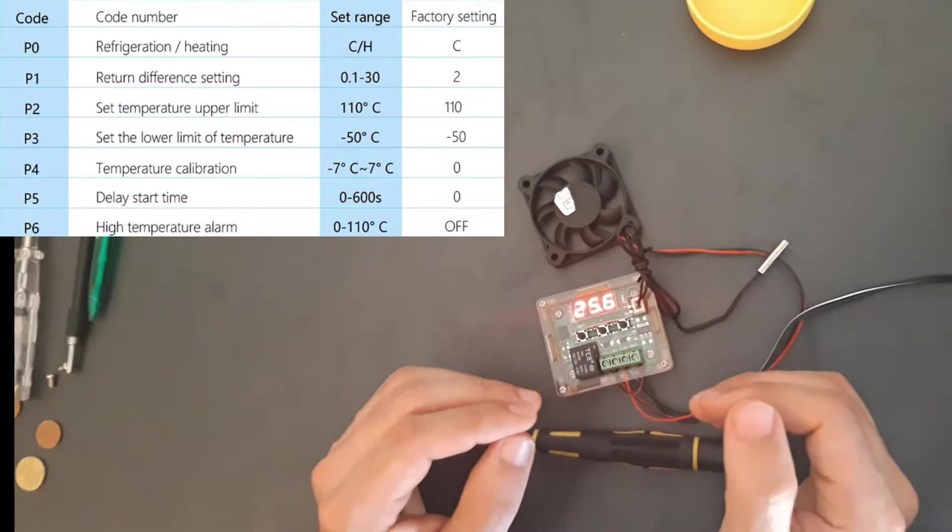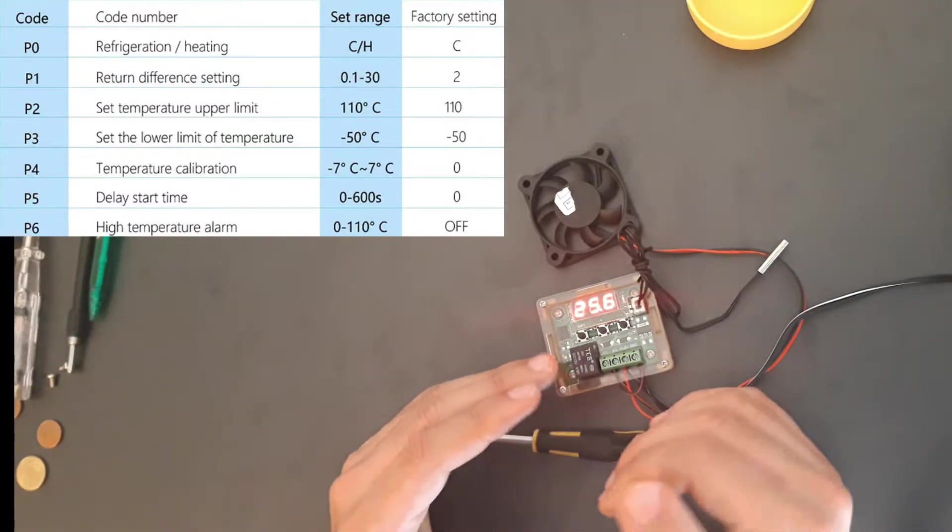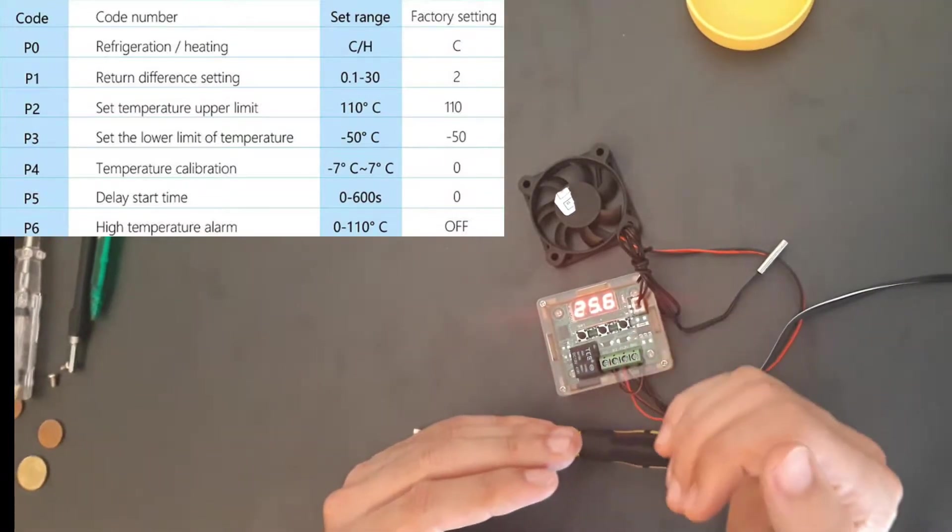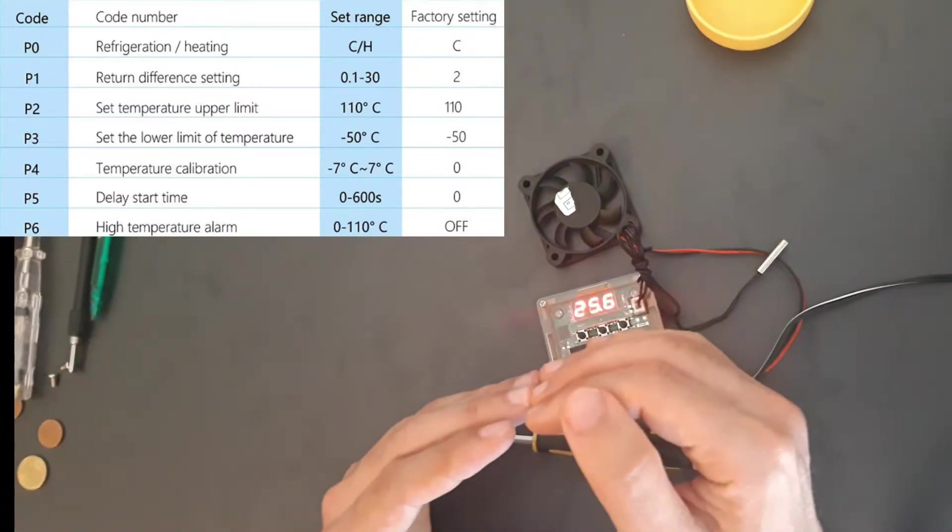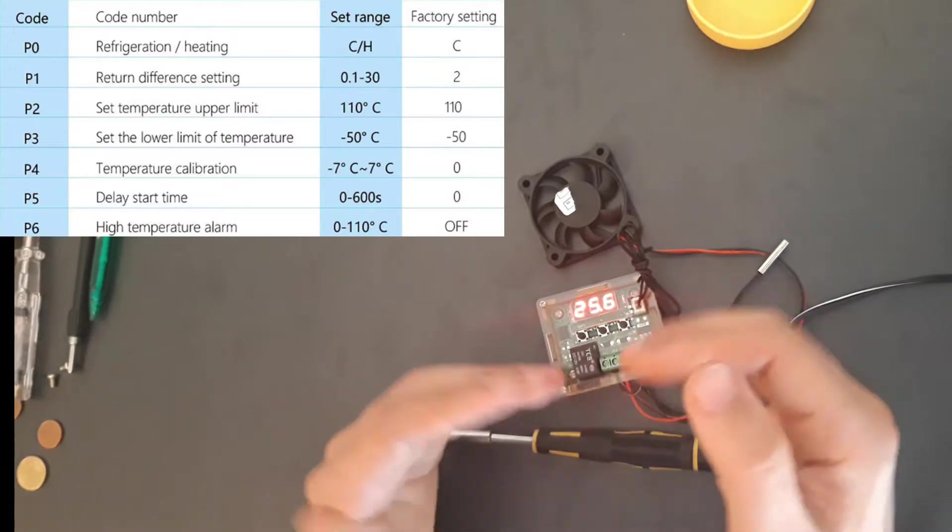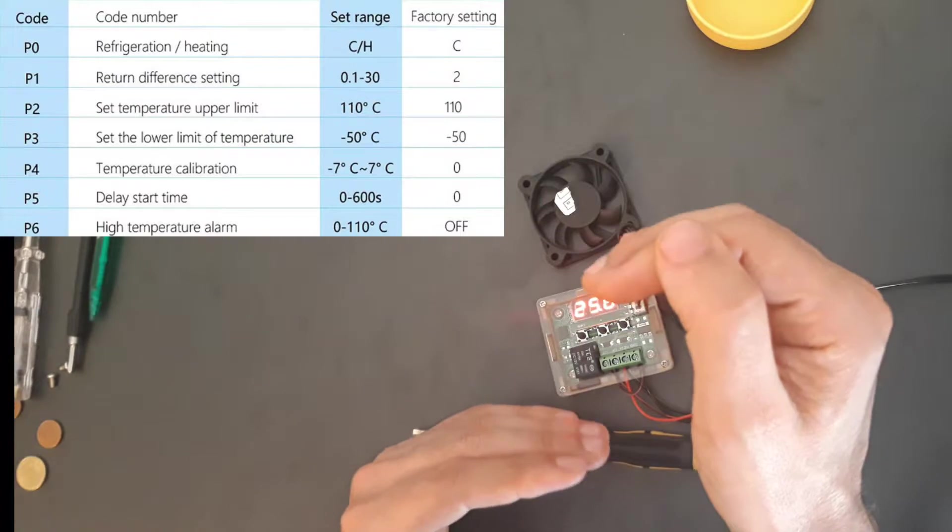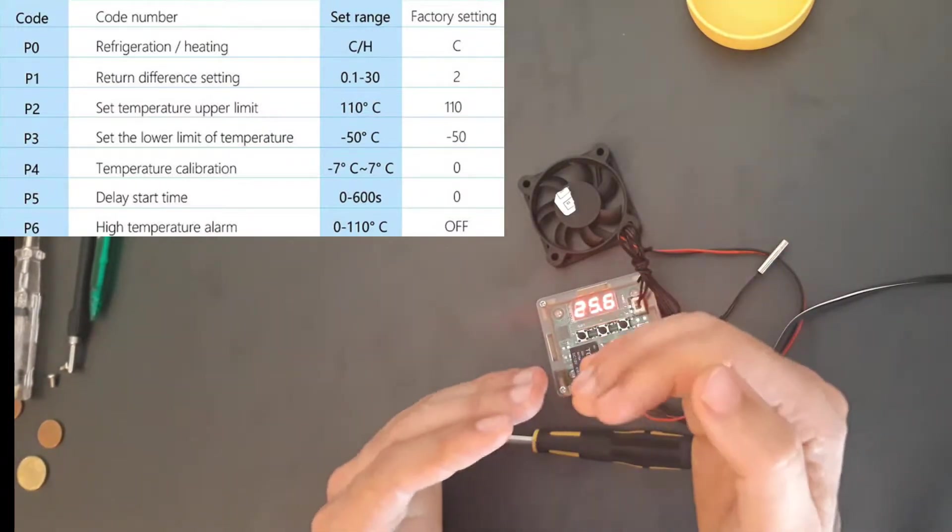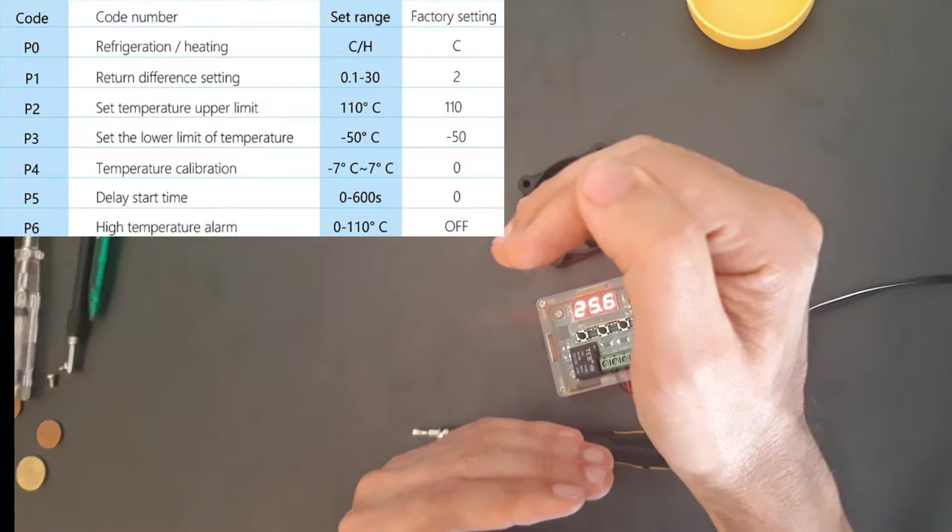It's a bit similar to what solar chargers do with batteries. Once the battery has gone down, they cut off the load. But the solar charger, in order to start giving electricity to the load again, won't do it at 12 volts. Imagine you have a 12-volt battery, it will do it at about 12.7, 12.8, or even 13. Otherwise the battery wouldn't charge, it would be like 12 volts charging, discharging, charging, discharging. So it gives time for the battery to get some charge, and then it will give the load electricity again.